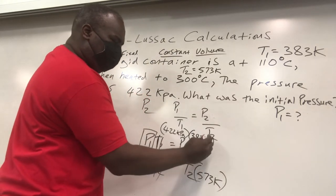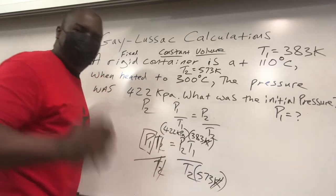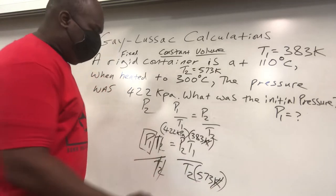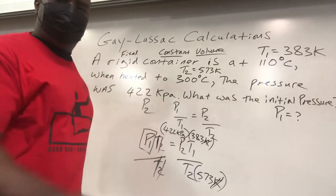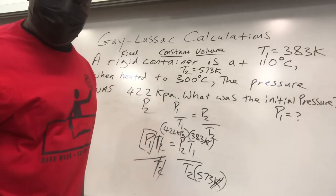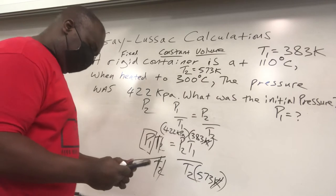Our T2 goes in the bottom. So we see our T2 is going to be 573 Kelvin. We're always working at Kelvin temperature. So 573 Kelvin goes there. Kelvin at the top, Kelvin at the bottom, they cancel. We're happy. Why are we happy? Because we're looking for pressure, and kPa, kilopascals, is the unit of pressure. We're good to go.